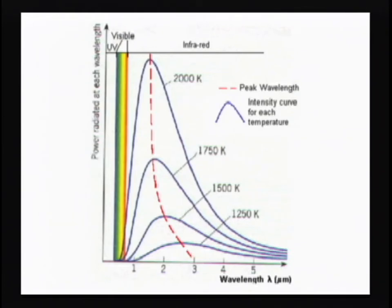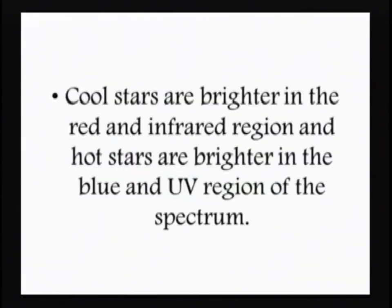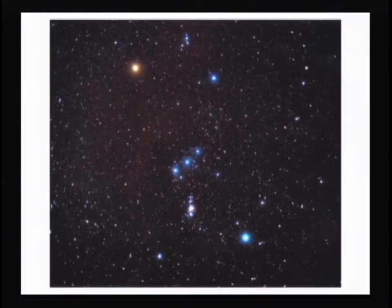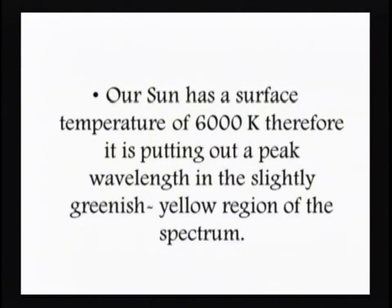Cool stars are brighter in the red and infrared regions of the electromagnetic spectrum, and hot stars are brighter in the blue and ultraviolet regions — which makes sense since red and infrared are lower in energy. Looking at Orion, you can see red stars and blue stars, and the blue stars are obviously hotter. Our sun has a temperature of about 5800 K, putting its peak wavelength in the greenish-yellow region of the spectrum.